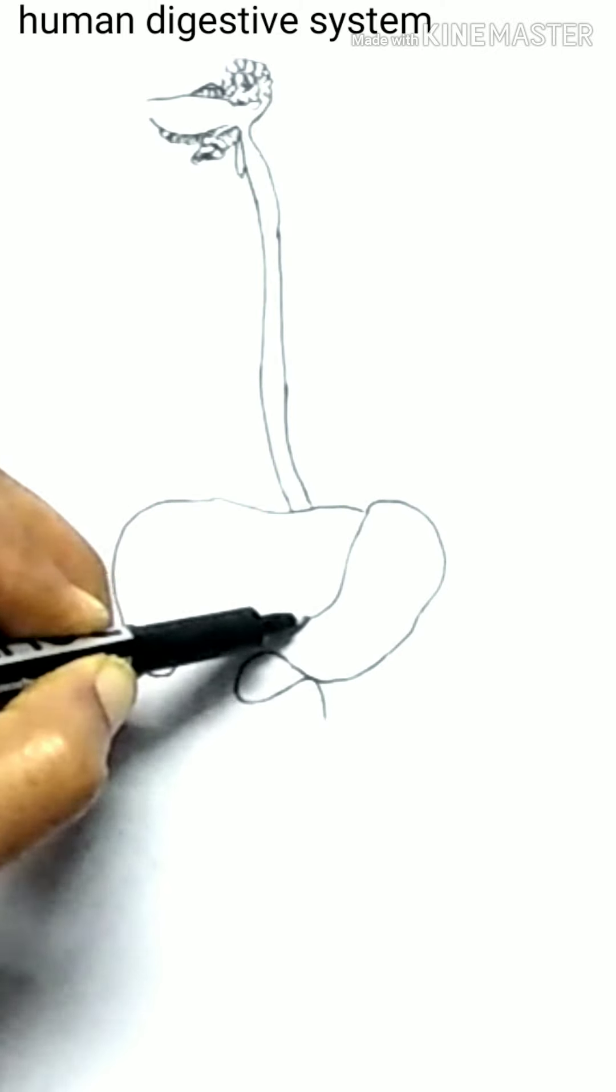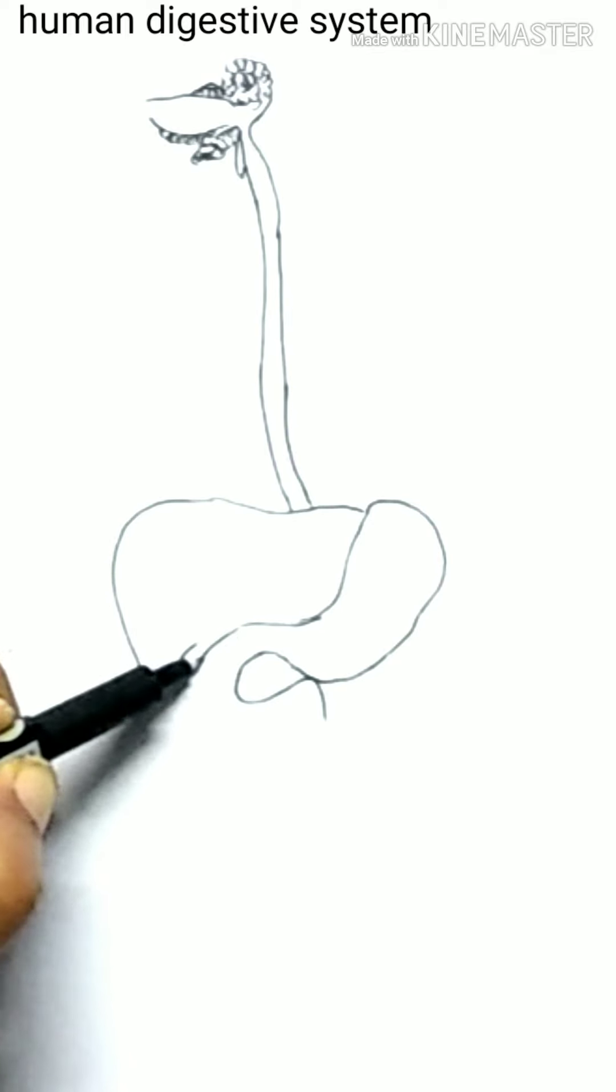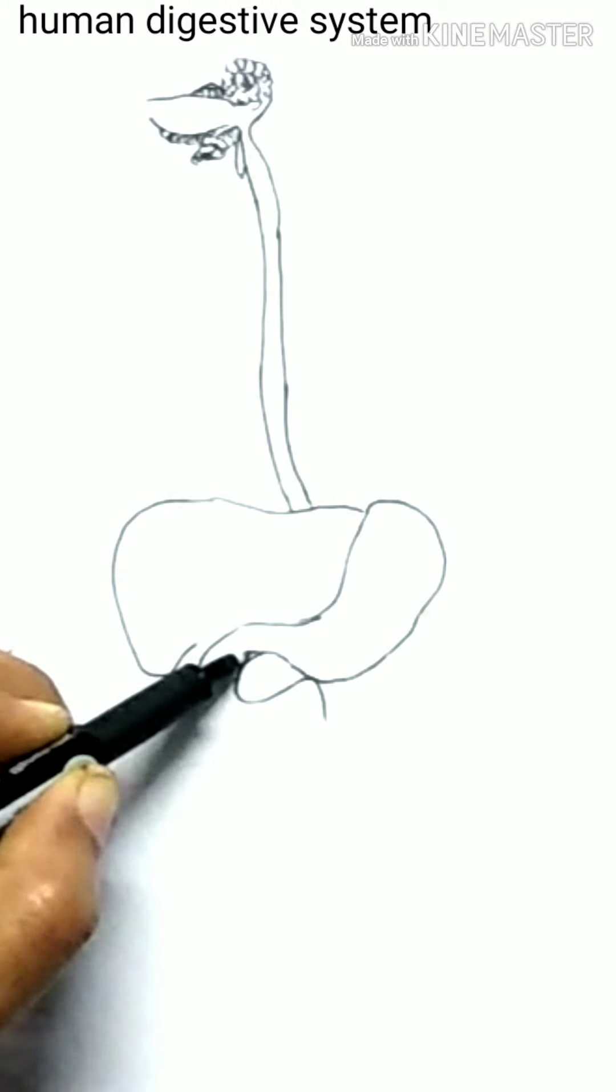At third stage, the food from mouth then goes down the esophagus which is the food pipe to the stomach through the movement of walls of esophagus.